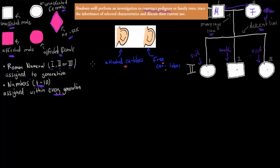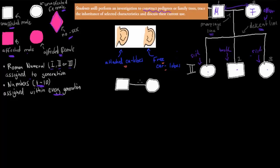If I draw a white symbol, that means the person has free earlobes — they do not have attached earlobes. If I draw a pink one, that means they have attached earlobes. Both my father and mother are white, because they both have free earlobes — they do not have attached earlobes. This is the marriage line because they are married. I assign Roman numeral I because it's generation one, and the numbers are 1 and 2. They've had children — I have three siblings, so they had four children total. This is the descent line.